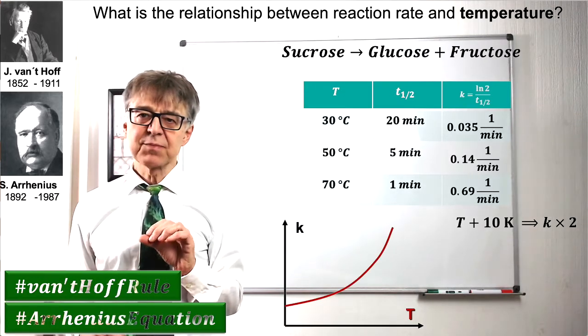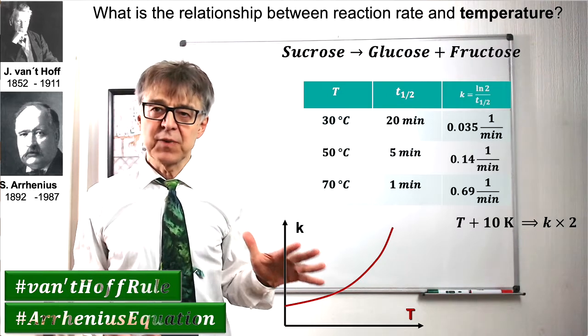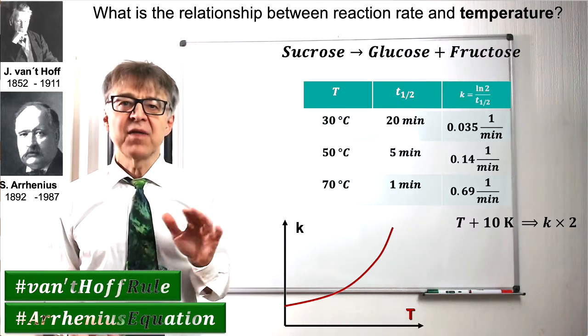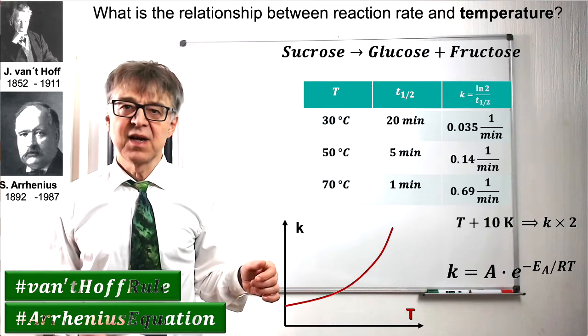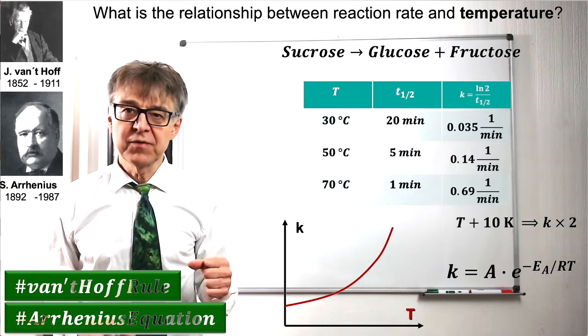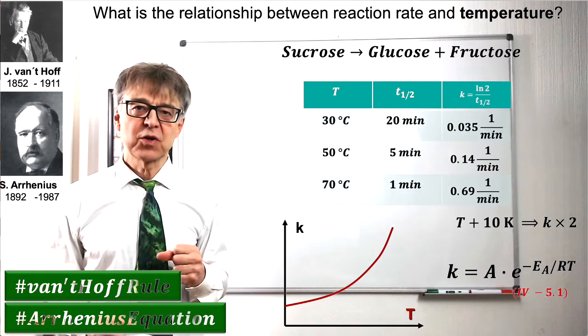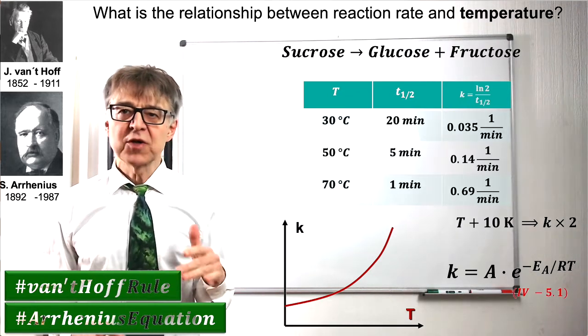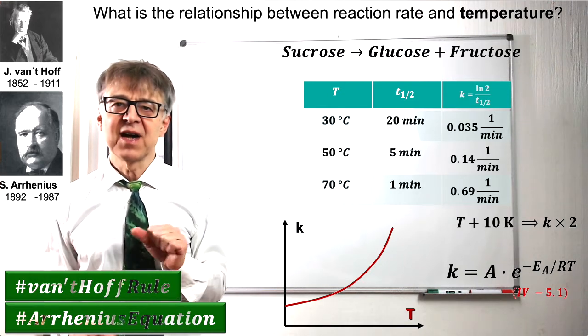Svante Arrhenius expressed the dependence of K with temperature in the famous equation named after him. The Arrhenius equation contains two kinetic parameters, namely the activation energy, E sub A, which we already know from the reaction profile, and the frequency factor A, also called pre-exponential factor, which corresponds to the limit value of the rate constant for an infinitely high temperature.